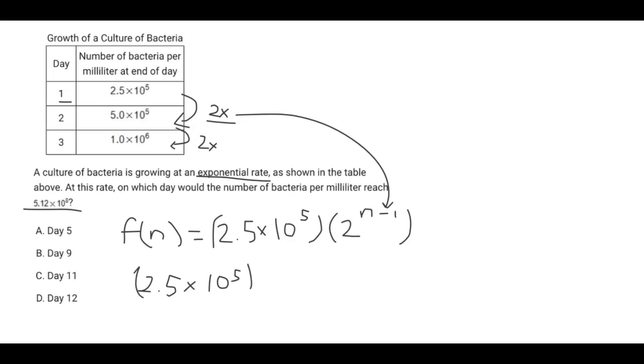So it's just this equation: 2.5 times 10 to the power of 5 times 2 to the power of n minus 1, and this is going to be equivalent to 5.12 times 10 to the power of 8. And in this equation, we're just going to solve for n.